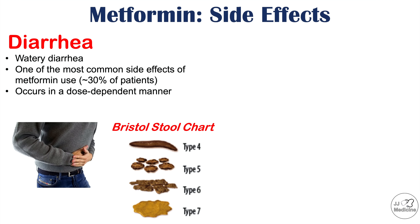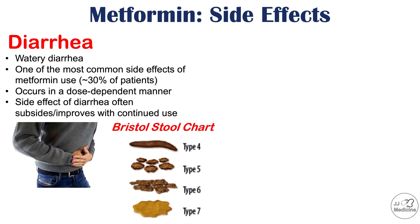Metformin is often started at a lower dose. Patients will get diarrhea, and then the diarrhea will subside. The provider will then increase the dose to a higher level, and the patient will get diarrhea again, which will subside until the therapeutic dose is reached. The side effect of diarrhea will typically improve with continued use, then recur when the dose is increased before subsiding again.